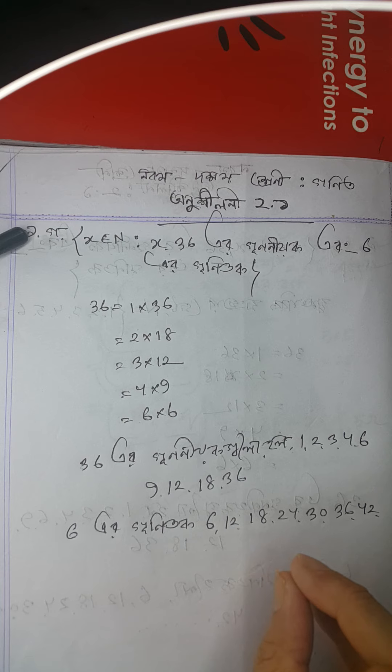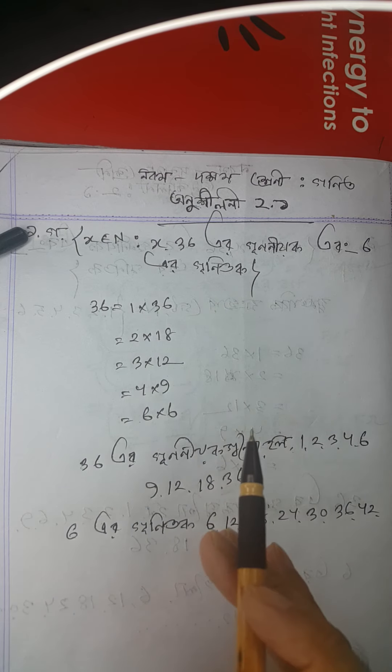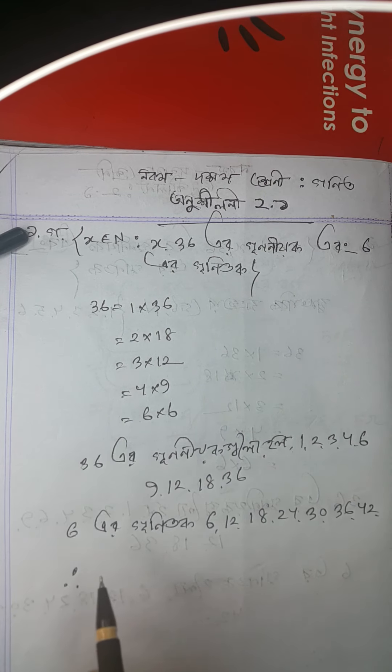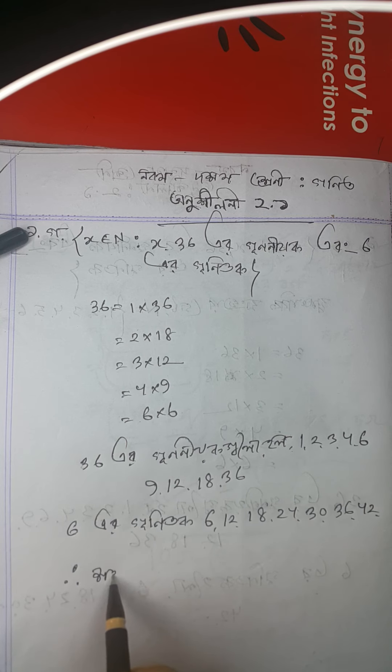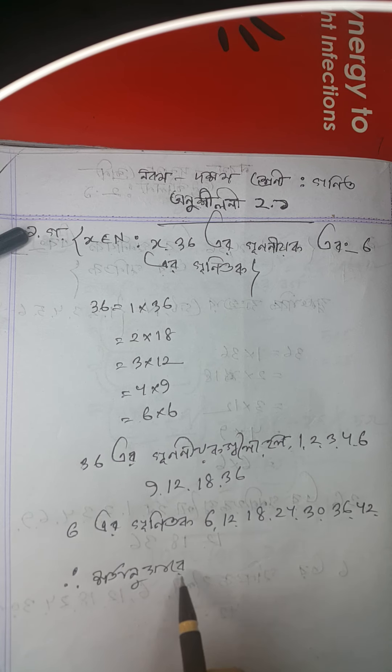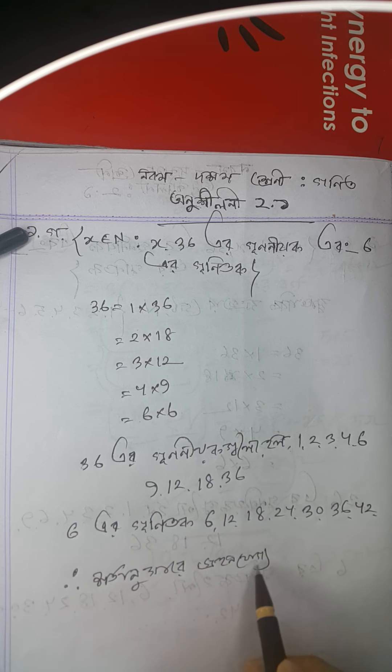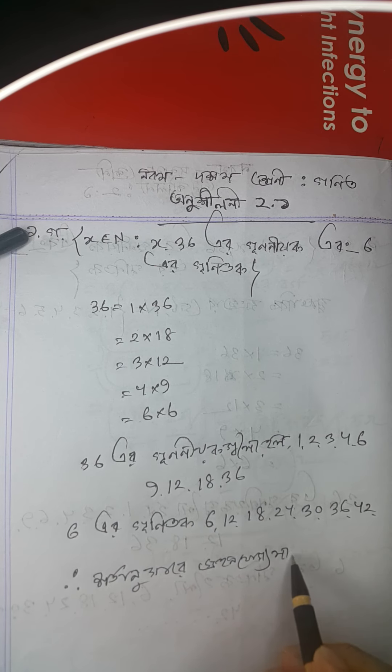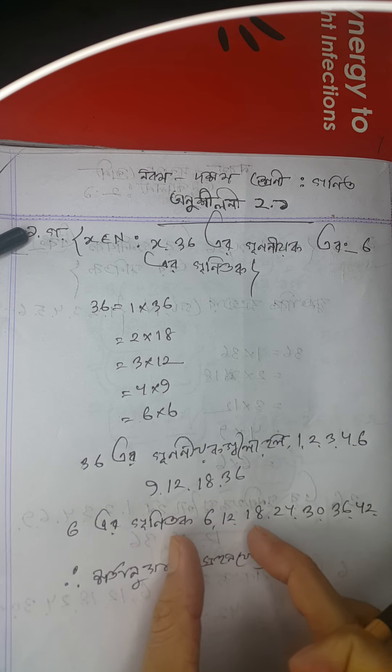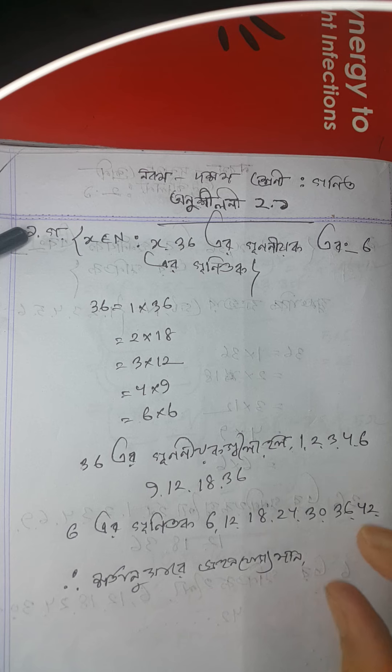Looking at our factors of 36 and comparing them with multiples of 6, we can identify which numbers appear in both sets. We need to check each factor to see if it's divisible by 6.